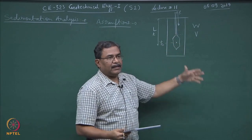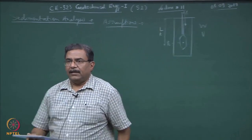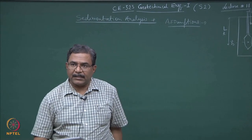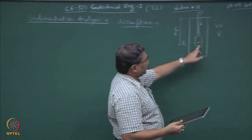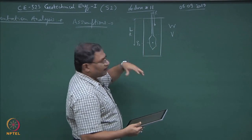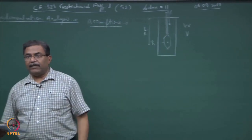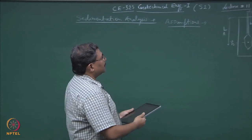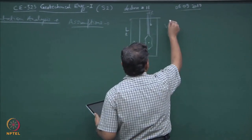Normally R increases from 0 to some number depending upon the type of hydrometer you are using. I have talked about the corrections which are applied for hydrometer readings: the meniscus correction, the application of corrections for dispersing agent, and the displacement of fluid because of the hydrometer. These are the 3 corrections which you normally apply: temperature correction, meniscus correction, and displacement of fluid. Some of them are additive, some of them are negative, and then you apply and get the readings.